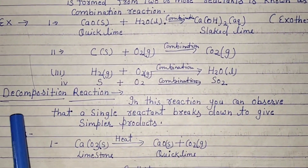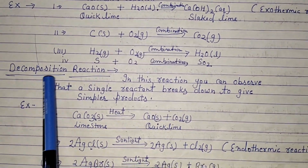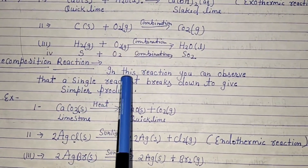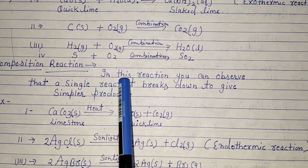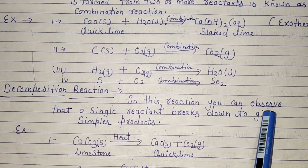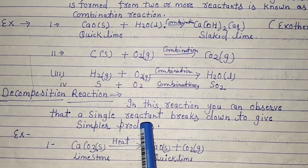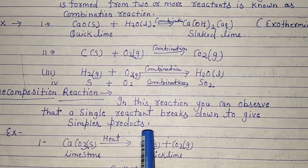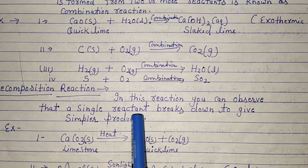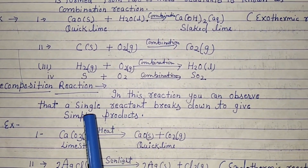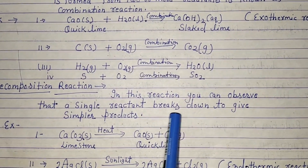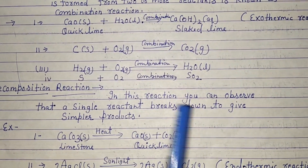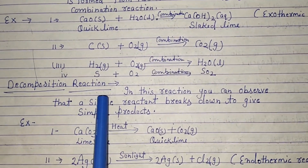Next type: decomposition reaction. In a decomposition reaction, a single reactant breaks down to give simpler products. When a single reactant breaks down into simpler products, it is called a decomposition reaction.